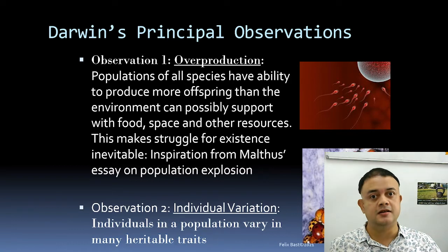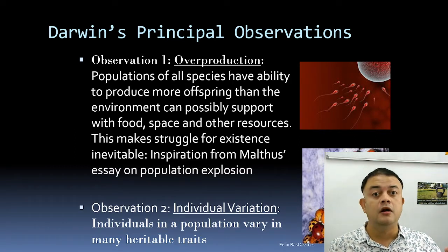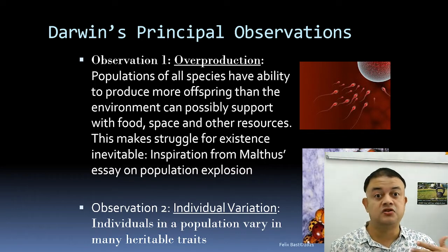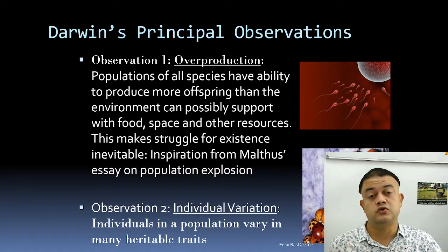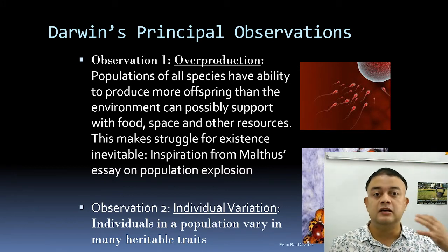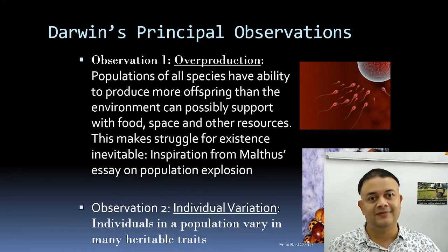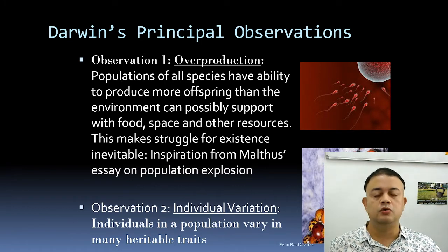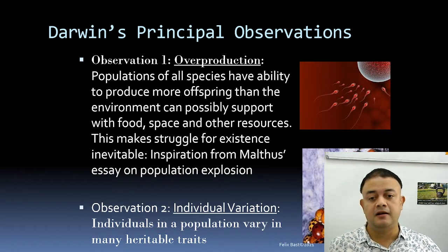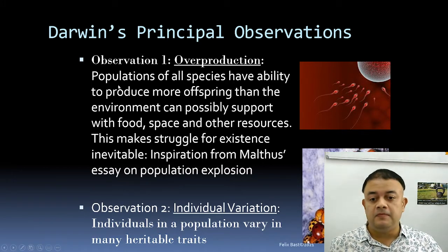The overproduction idea is not just Darwin's — he was tremendously influenced by Malthus, the demographer. Malthus wrote a very interesting theory about why the struggle for existence is important: resources are limited while individuals keep reproducing. Darwin observed this for every organism on planet Earth. Resources are limited, so struggle for existence is inevitable.